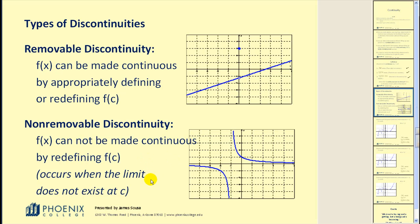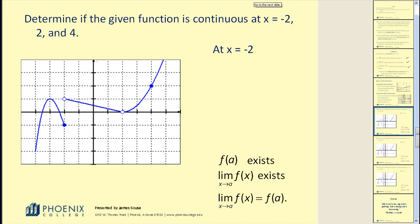This type of discontinuity occurs when the limit does not exist at c. Let's take a look at an example. Determine if the given function is continuous at x equals negative 2, 2, and 4. Let's first consider x equals negative 2. We're looking at the function in this region, and we want to state if it is discontinuous and what the reason is. I've rewritten the three conditions here that we can verify.